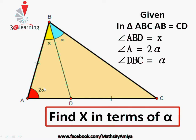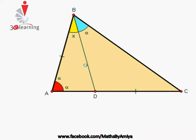I am bisecting angle A by a line. Why? Because we have α — this line is equal to this line — so we are looking for another α. We can create a line and equate two triangles or try for similarity. The constructed line from A bisects and we name it AE, so AE is the angle bisector of angle A.